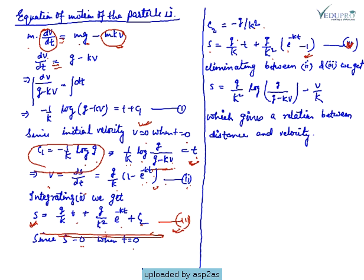Now eliminating between equations 2 and 3, we get - so then eliminating t, that would be...